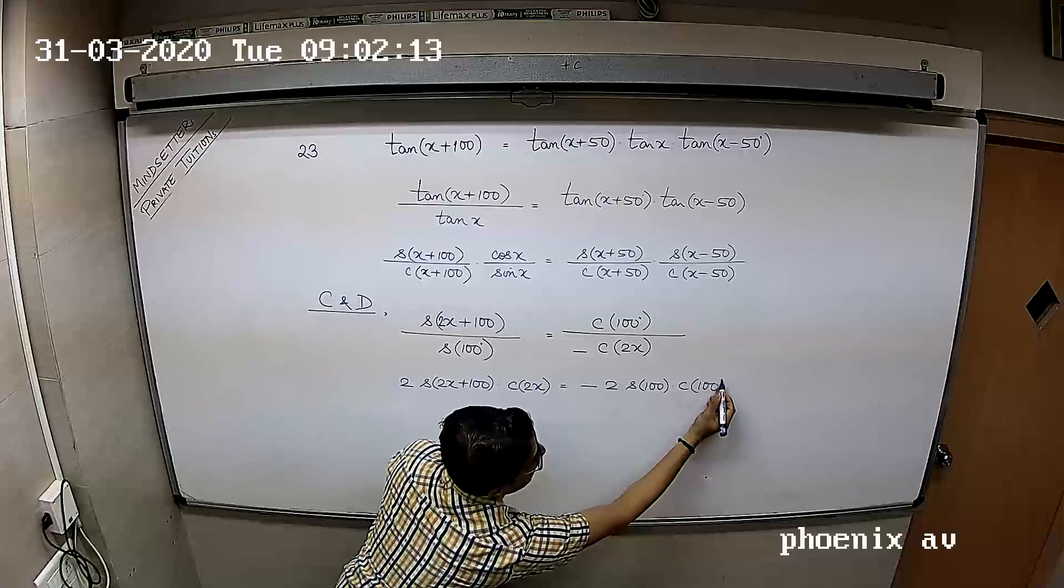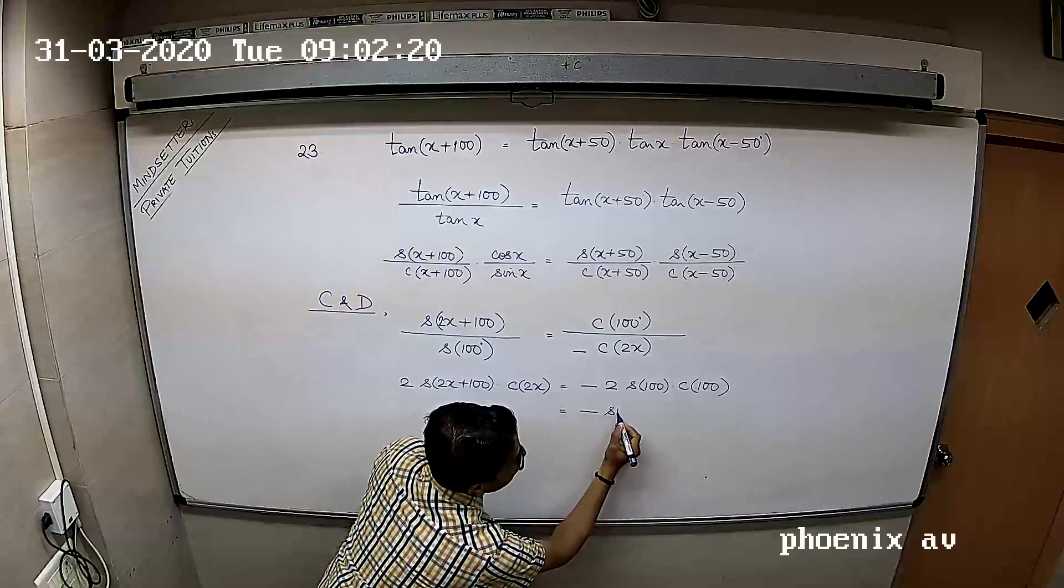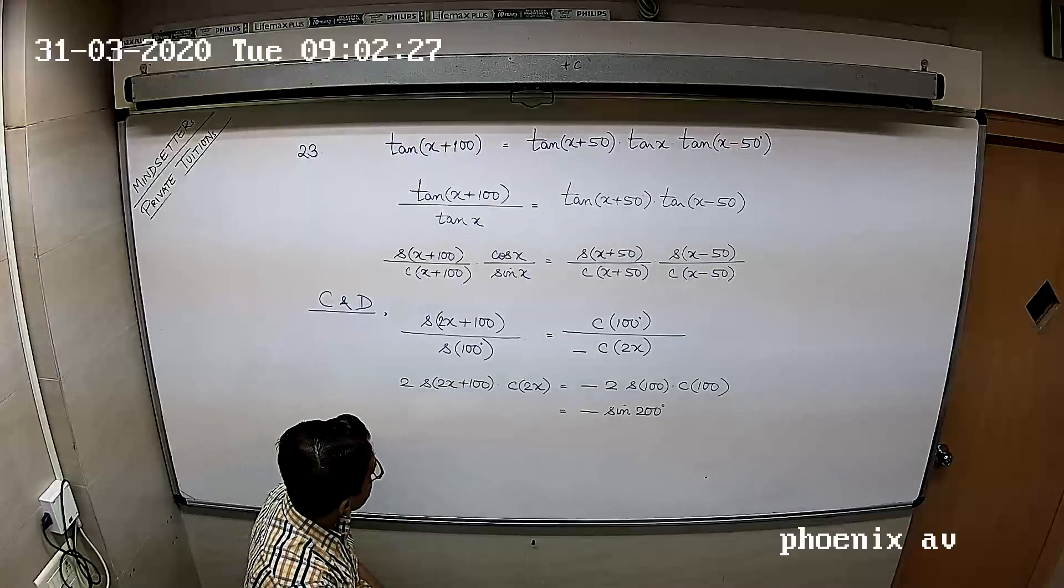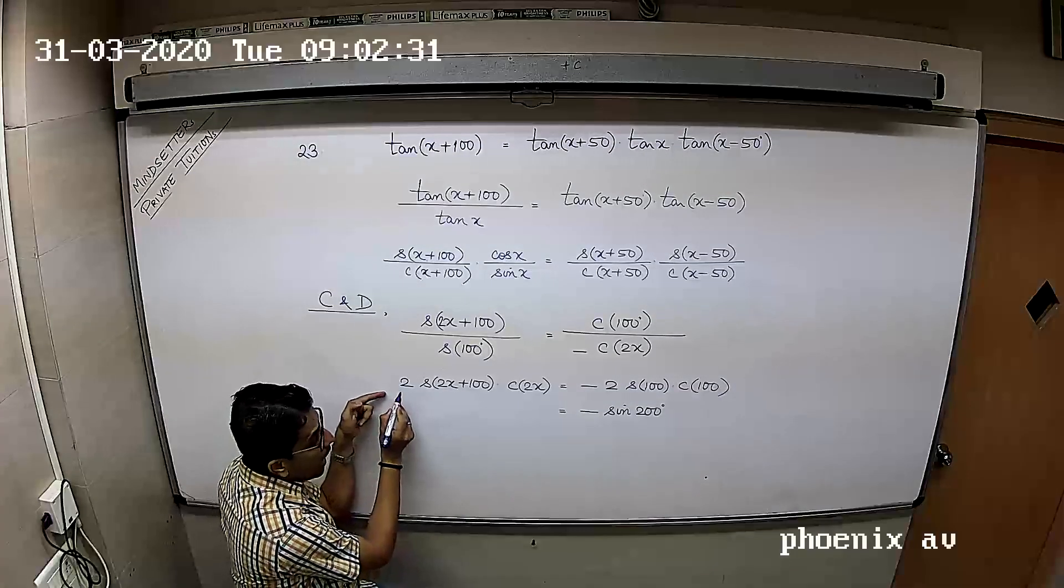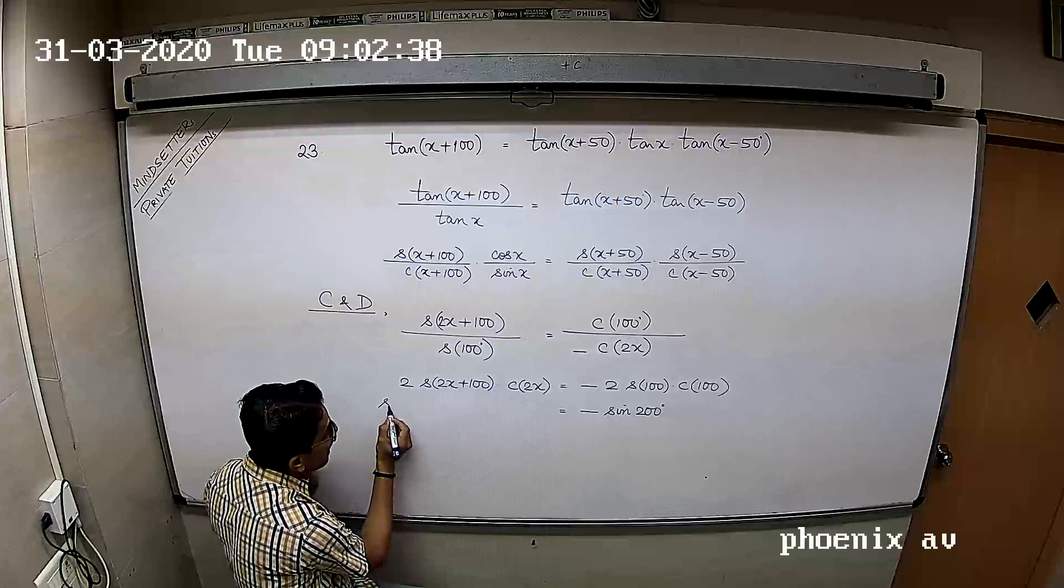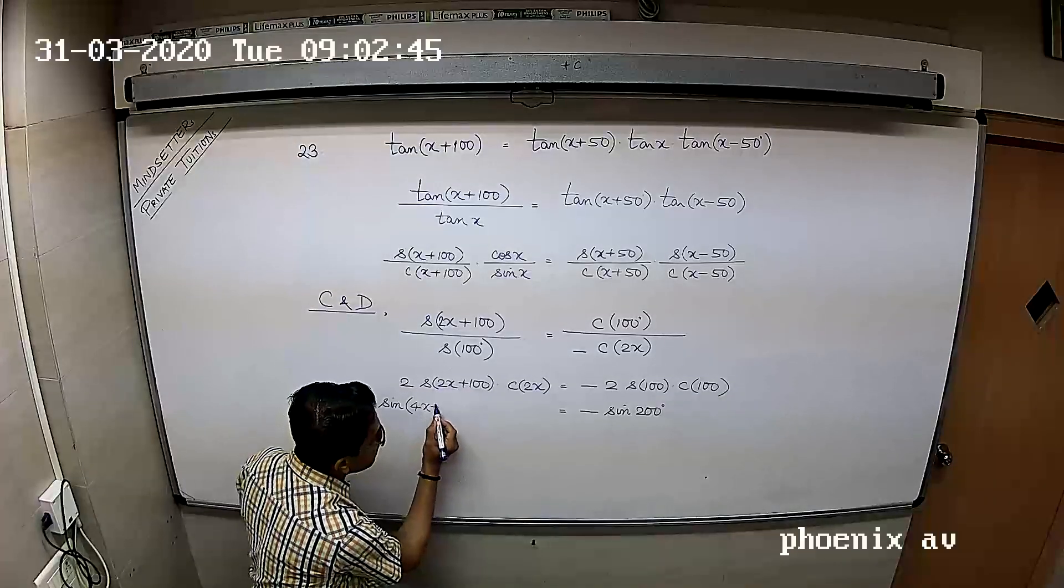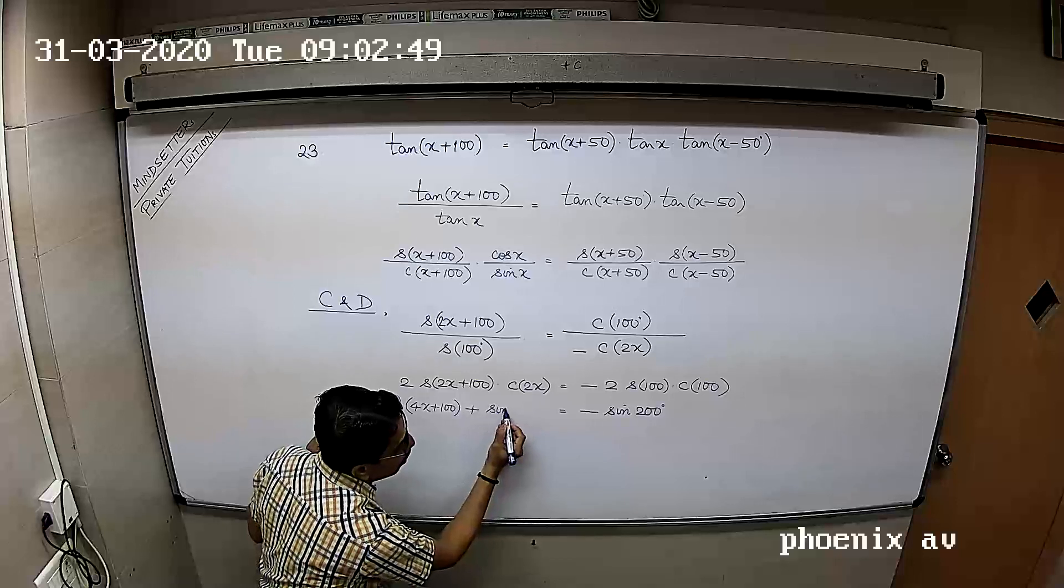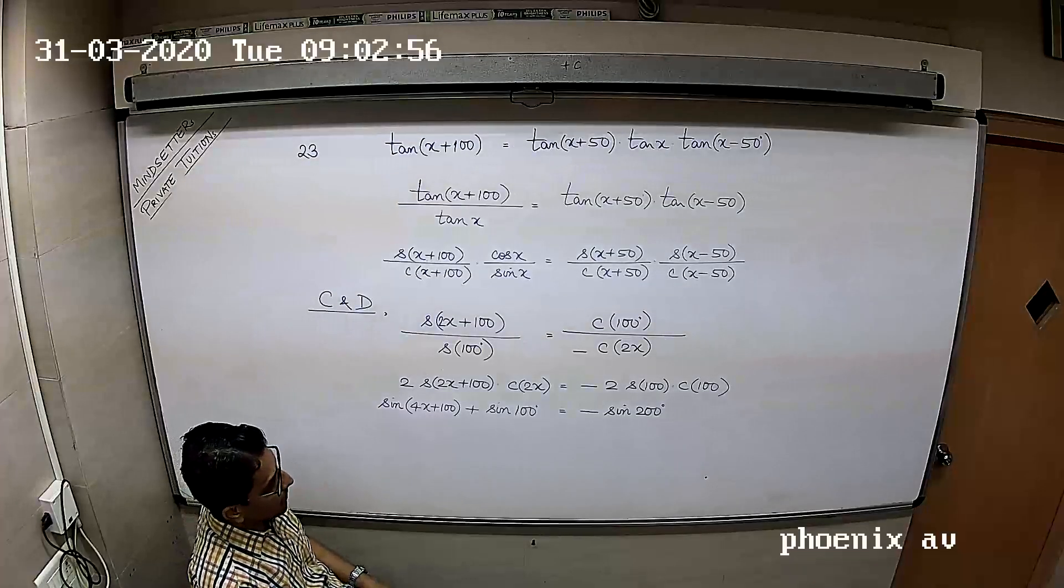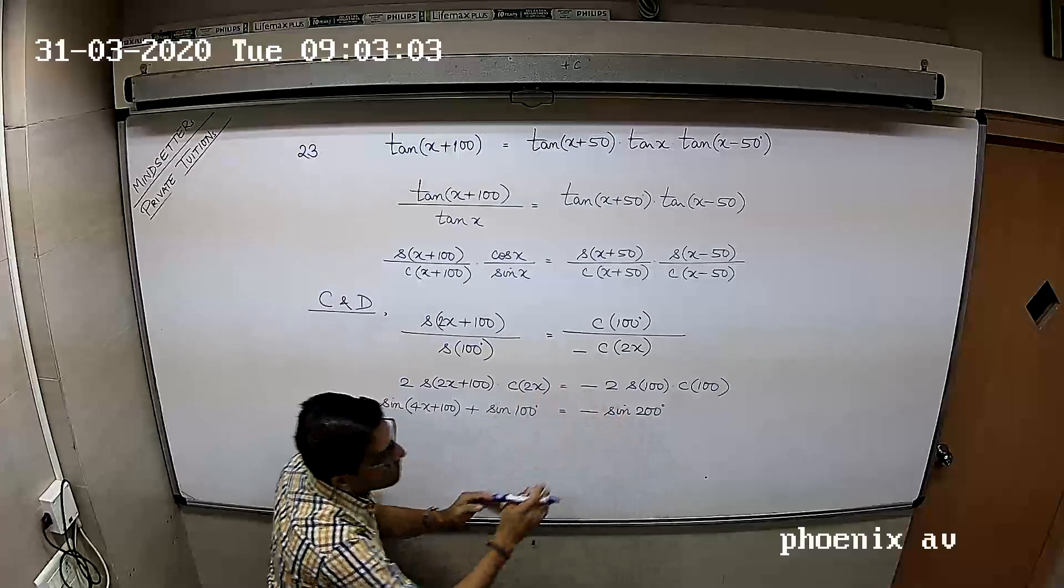Multiplying by 2, 2 sine whatever cos whatever is minus 2 sine 100 cos 100 degrees, that's minus sine 200 degrees. Can we apply the factorization again? 2 sine A cos B is sine of A plus B and plus sine of A minus B.